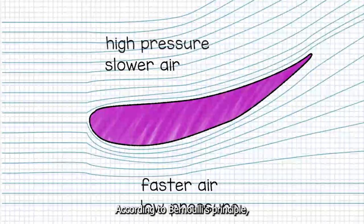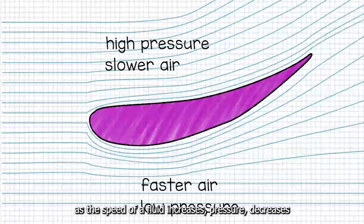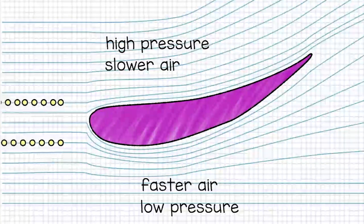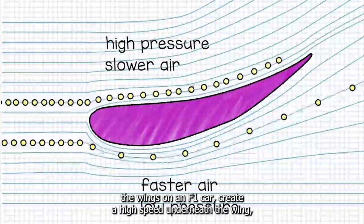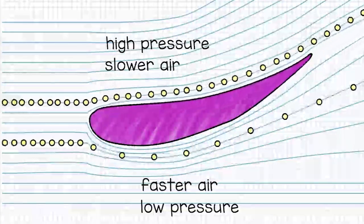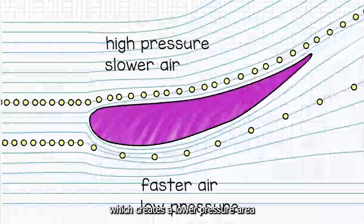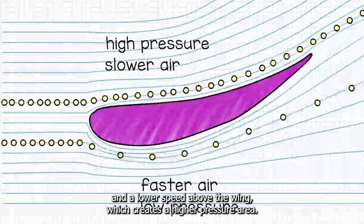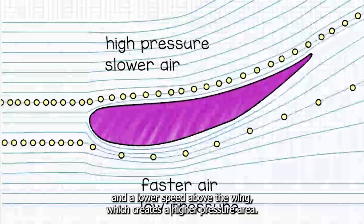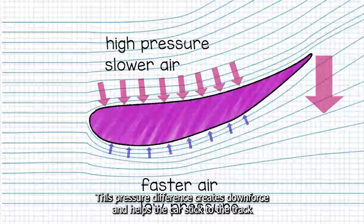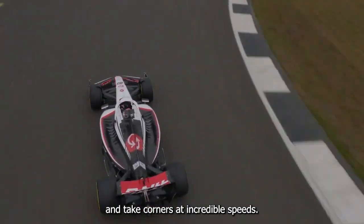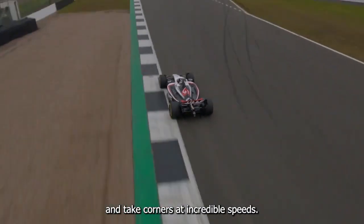According to Bernoulli's principle, as the speed of a fluid increases, pressure decreases. The wings on an F1 car create a higher speed underneath the wing, which creates a lower pressure area, and a lower speed above the wing, which creates a higher pressure area. This pressure difference creates downforce and helps the car stick to the track and take corners at incredible speeds.